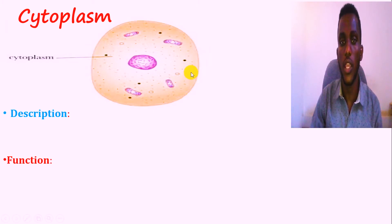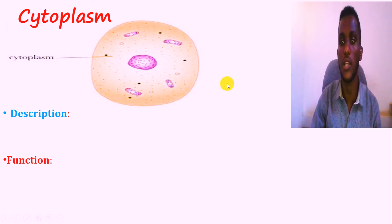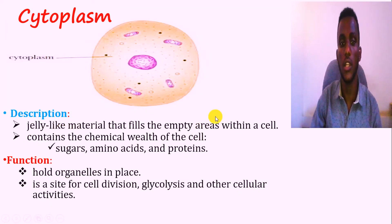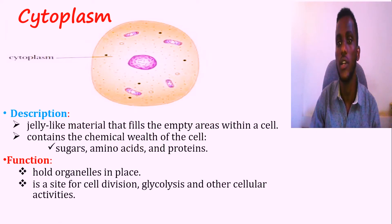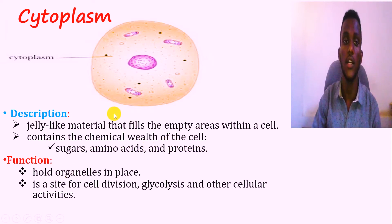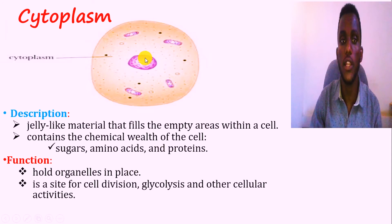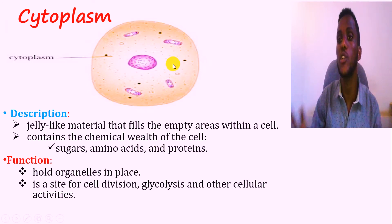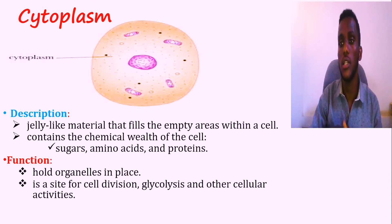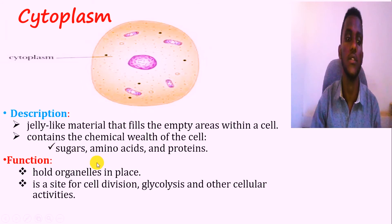The cytoplasm is the fluid or jelly-like material that consists of chemicals or nutrients, which is important for the health of the cell. The cells are important for holding the organs in place — including the mitochondria, ribosome, and nucleus. The cytoplasm is the organ that is localized in position.